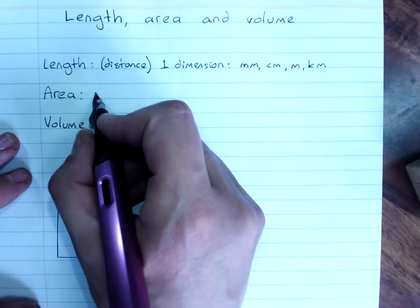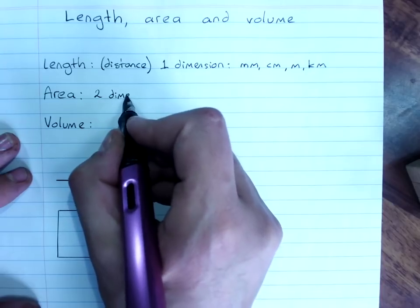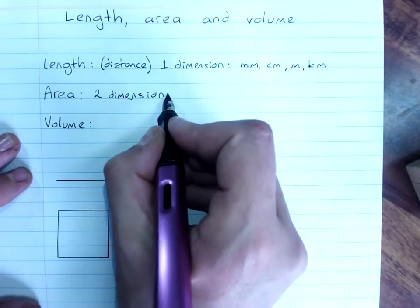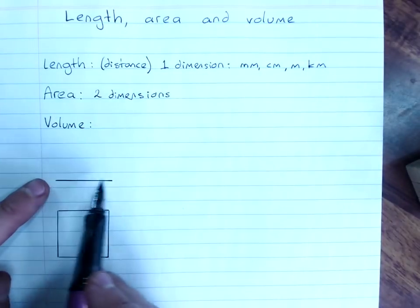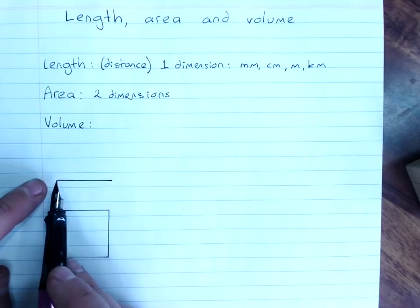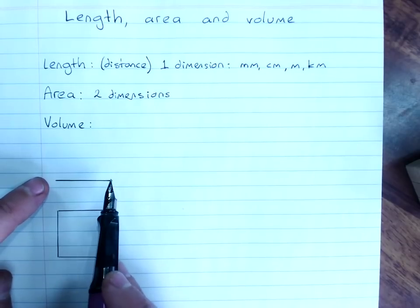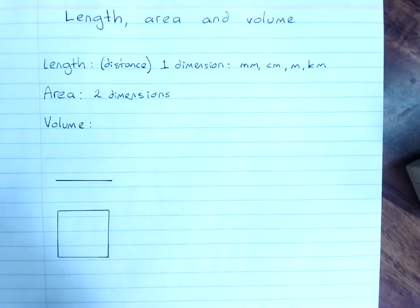Area is two dimensions. This has no area. I mean, technically it does, because that's like about a millimeter, but if we said, look, that's just a line, no area.